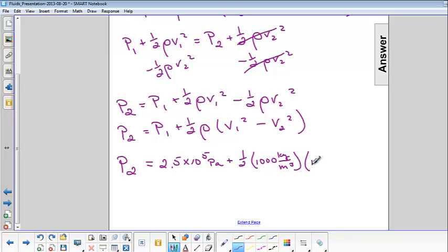And the first velocity is 10 meters per second. And the second velocity is 20 meters per second. Now when we calculate this, we should get 1 times 10 to the 5th pascals.